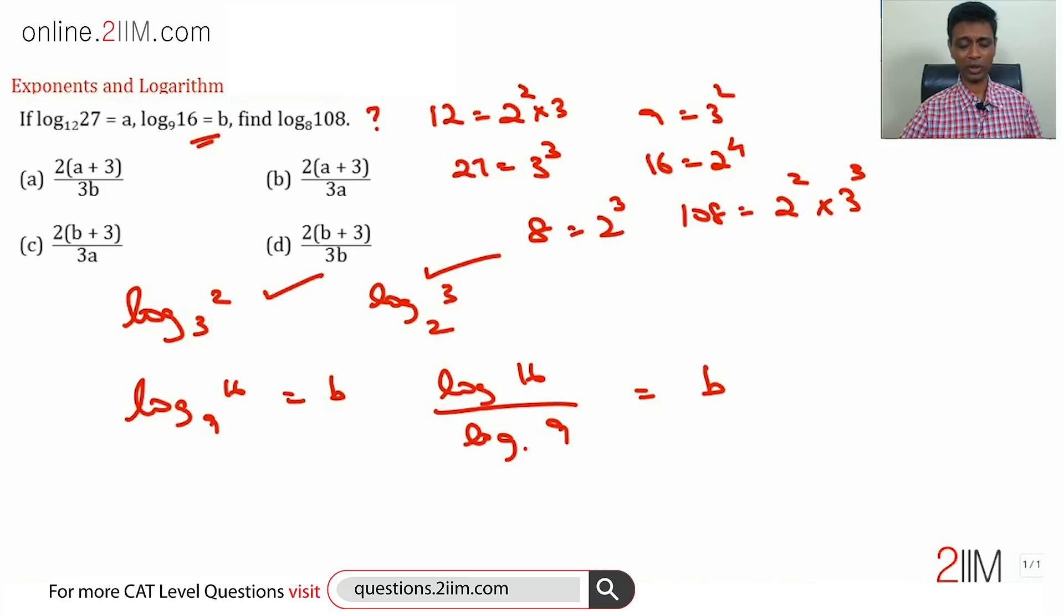Let me choose the base as 3. Why 3? Because I want to remove the denominator, I'll deal with the numerator alone. Log 9 to the base 3 is 2, 3 squared is 9, or we know that.